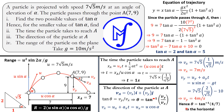The last part asks us to find the range of the particle. We use the formula: Range = u²·sin 2α / g, which can be rewritten as 2·u·sin α · u·cos α / g. We already have u, sin α, cos α, and g, so I'll be waiting for your answer in the comments section.